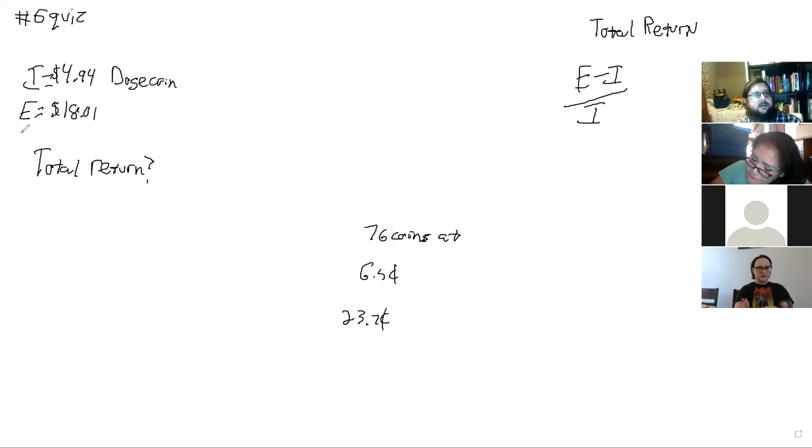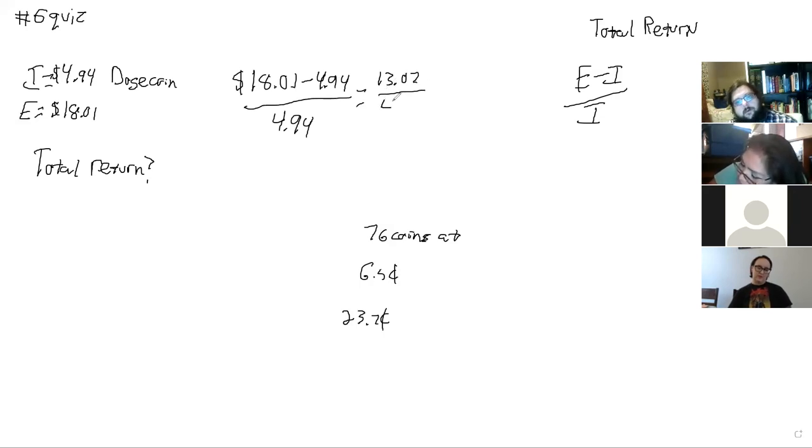I have earned $18.01, it cost me $4.94, and that's all over $4.94. So $18.01 minus $4.94 is $13.07 over $4.94.